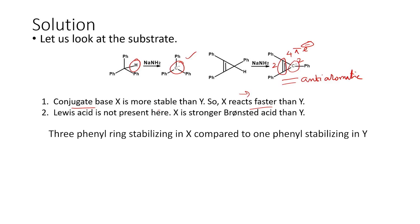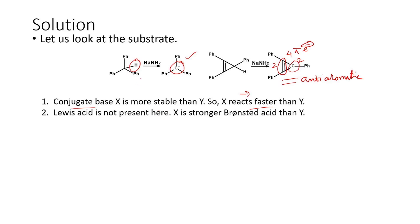We do not have any Lewis acid present here; Lewis acid is an electron-deficient species, but what we have is an electron-rich species. So Lewis acid is not present and any answer containing option C is ruled out. X is a stronger Brønsted acid than Y. Therefore, the final answer is: X reacts faster than Y, and X is a stronger Brønsted acid than Y.